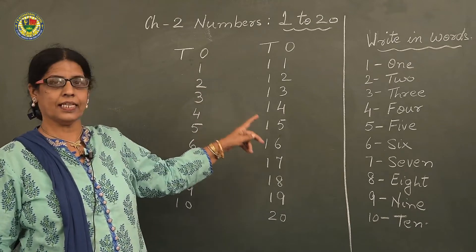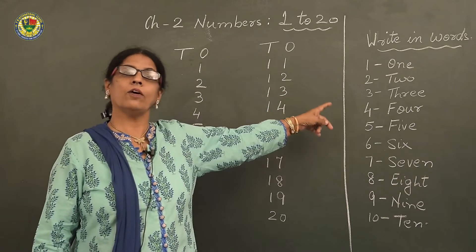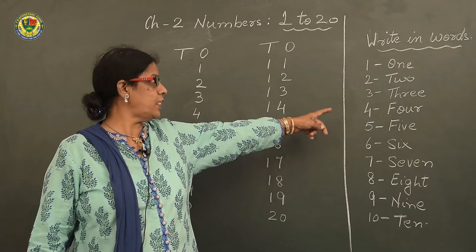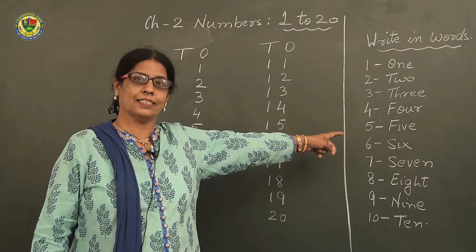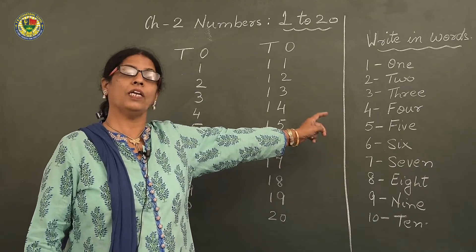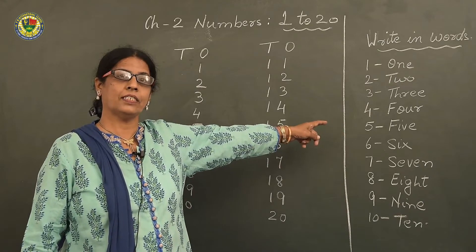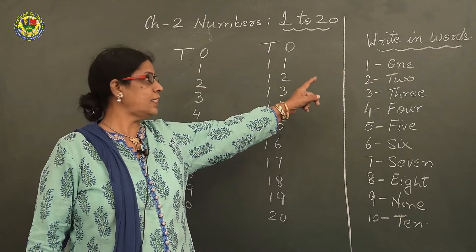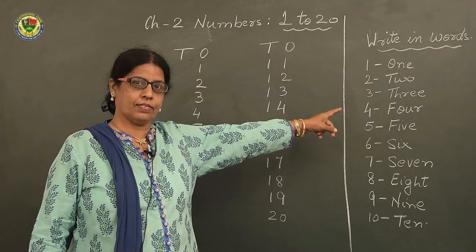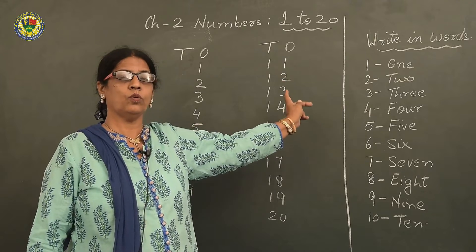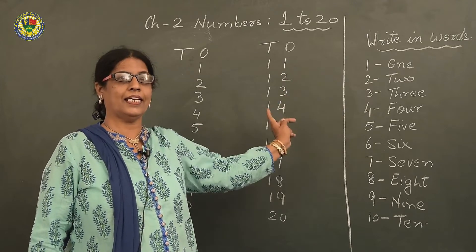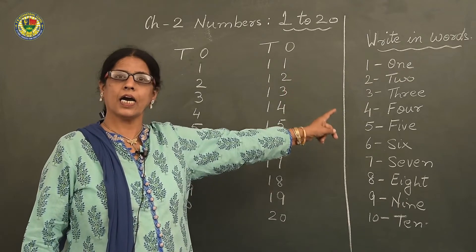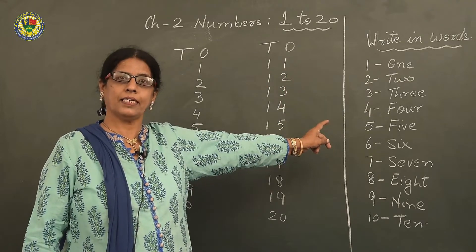After that, on the next page you will write in words. How we will write in words? 1 — O, N, E. 2 — T, W, O. 3 — T, H, R, E, E.